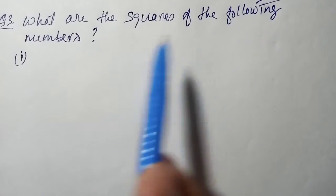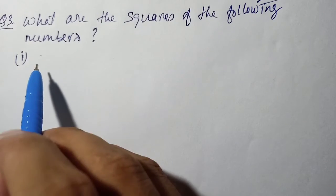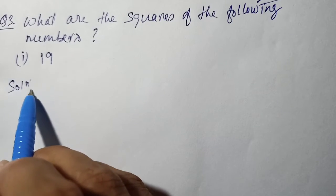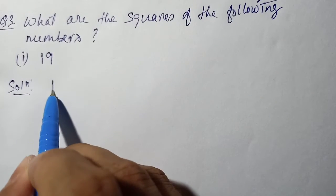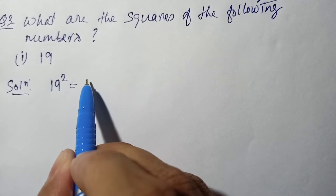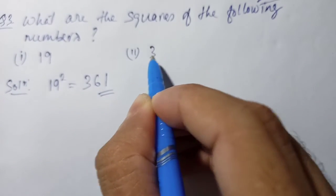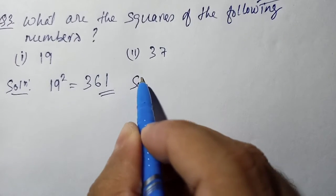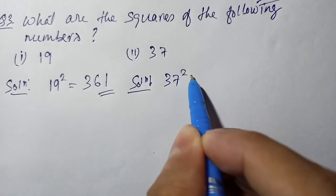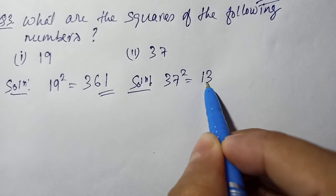Question number 3: find the squares of the following numbers. Question number 1: we have 19. If you make the square, you multiply 19 into 19 and you get 361. Question number 2: we have 37. If you make the square, we multiply 37 into 37 and we get 1369.